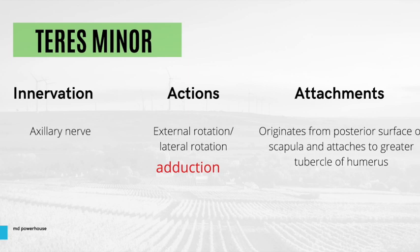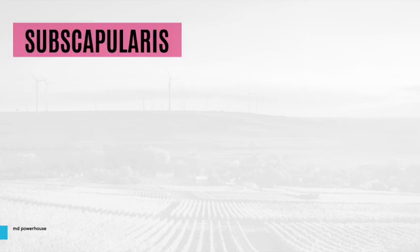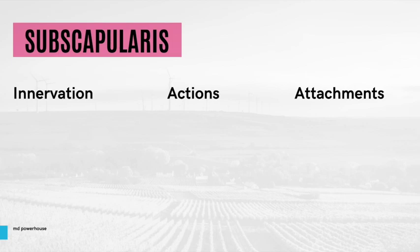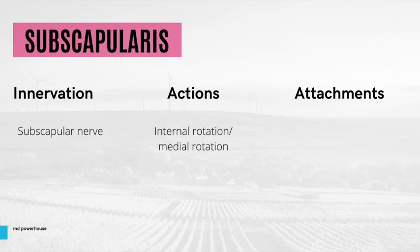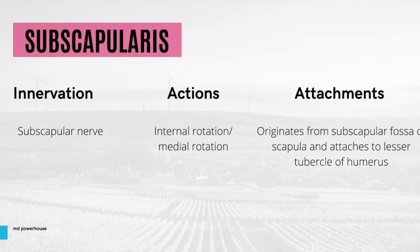The last rotator cuff muscle is the subscapularis. Three main groups: nerve innervation, actions, and attachments. The subscapularis is innervated by the subscapular nerve. Its action is internal rotation or medial rotation. For its attachments, it originates from the subscapular fossa of the scapula and attaches to the lesser tubercle of the humerus — notably, all other rotator cuff muscles attach to the greater tubercle, but subscapularis is the exception. It is also responsible for arm adduction, just like the teres minor.